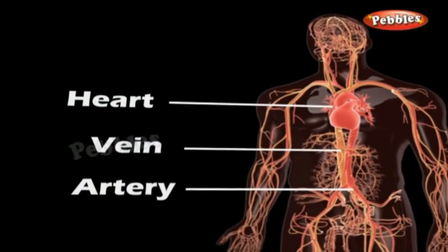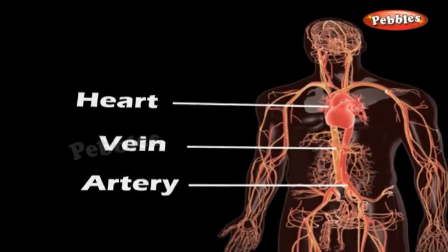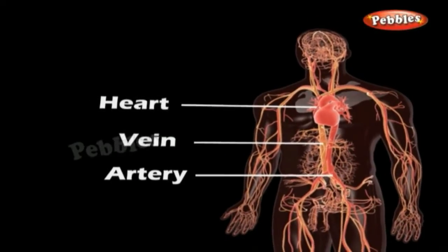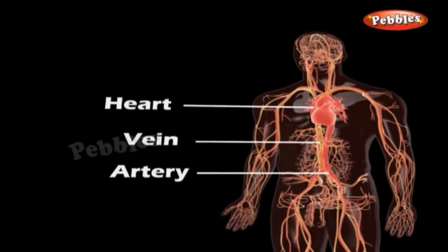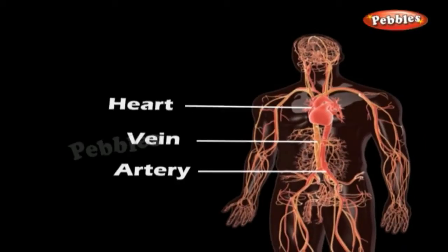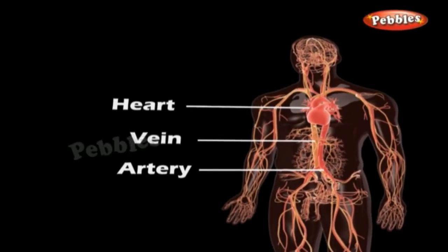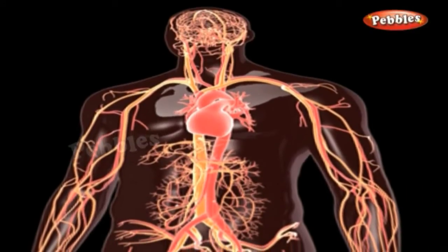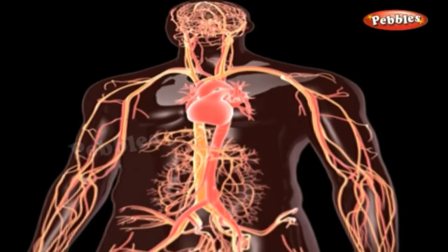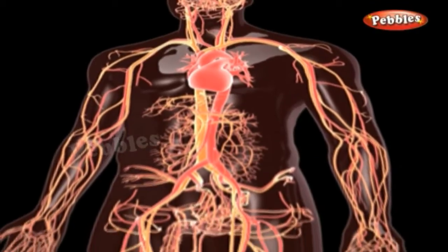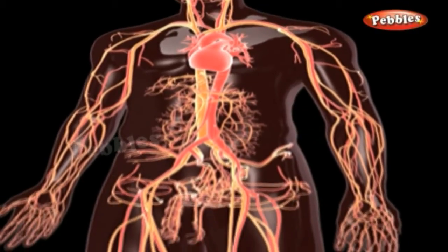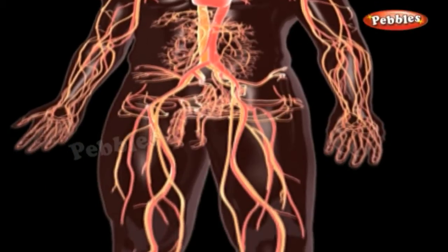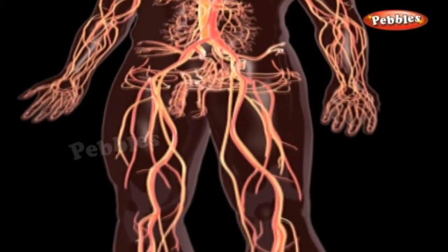It transports substances like digested food from the small intestine to the other parts of the body. It carries oxygen from the lungs to the cells of the body. It also transports waste for removal from the body. How does the blood carry various substances?